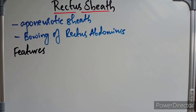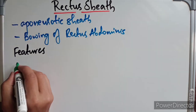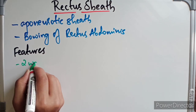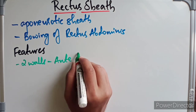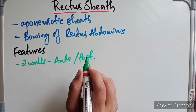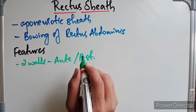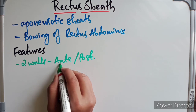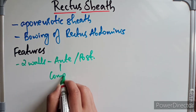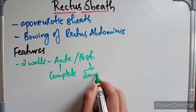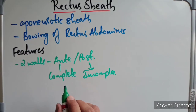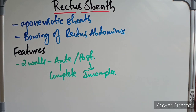What are the features of the rectus sheath? The rectus sheath presents anterior and posterior walls. The anterior wall is complete and covers the entire extent of the muscle, but the posterior wall is incomplete.